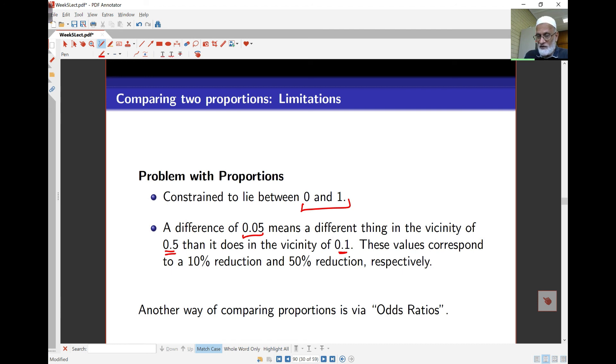0.05 of 0.5 is 10% here, whereas 0.05 of 0.1 is 50%. Quite different as far as the ratios go. So another way of looking at these kinds of proportions and differences is by odds ratio. Let's start looking at that in the next lecture. Thank you.